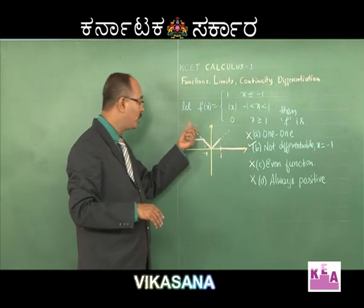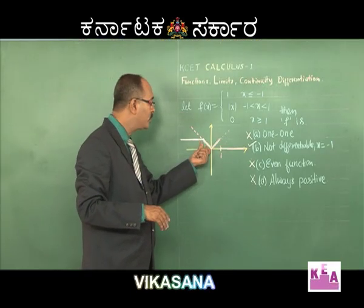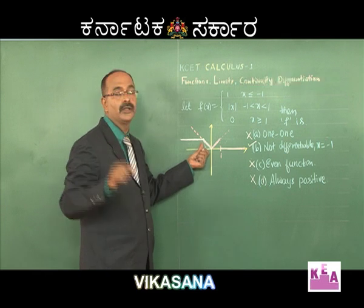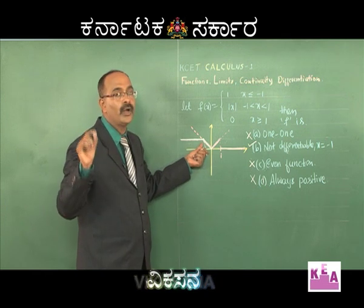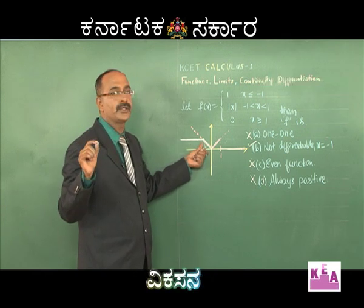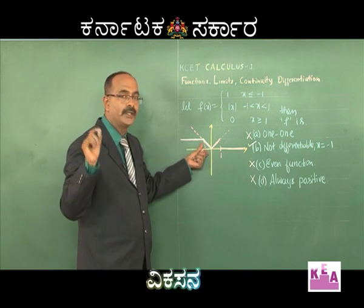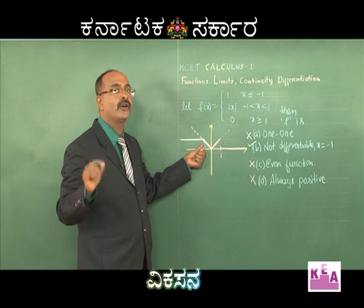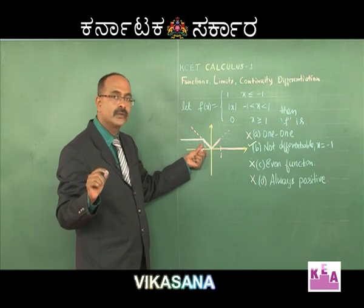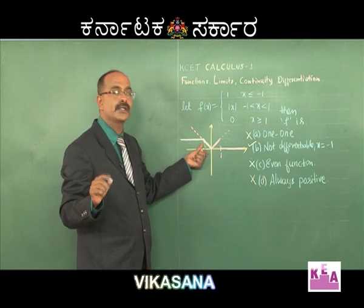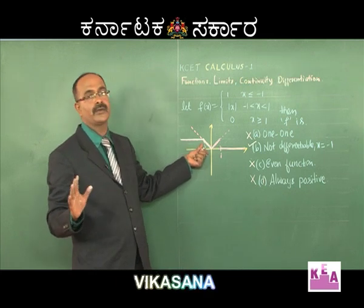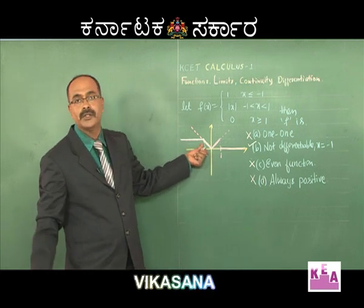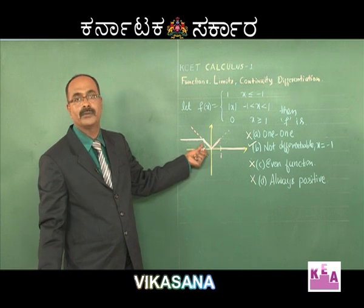How do we say f is not differentiable at x = minus 1? Wherever you have a sharp edge in the graph, call that point a non-differentiable point. Please make a note of this.